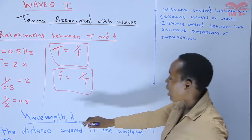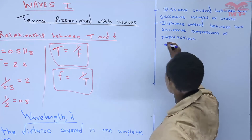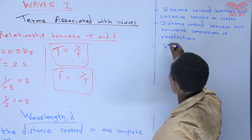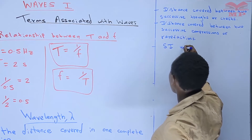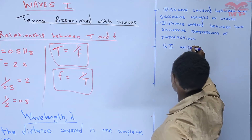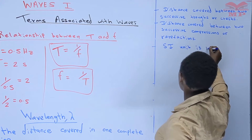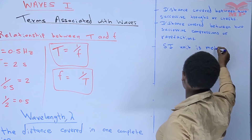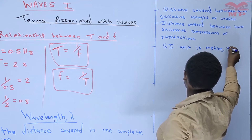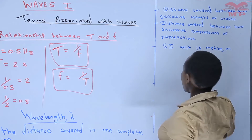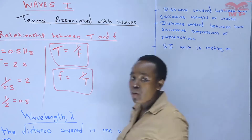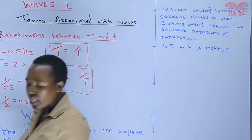Being a distance, therefore we can say that the SI unit is the meter. The SI unit is meter.